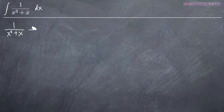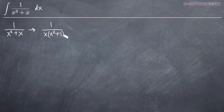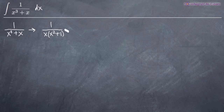We'll treat the function by itself outside of the integral and factor the denominator. We'll pull out an x to get x times the quantity x squared plus 1. You can't factor x squared plus 1 any further, so we've factored as completely as possible. This expression, 1 over x times the quantity x squared plus 1, is what we'll use in our partial fractions decomposition.